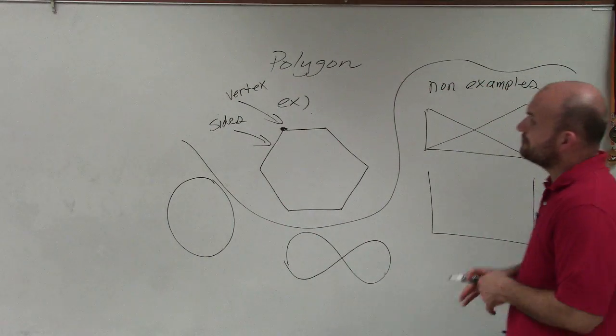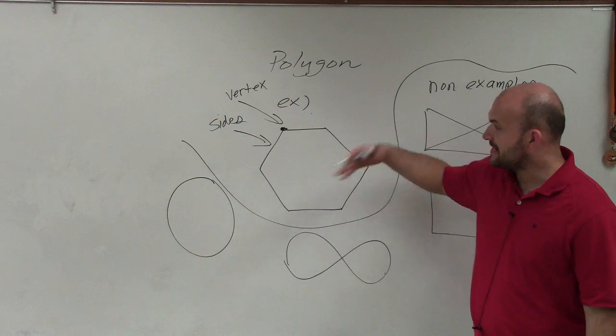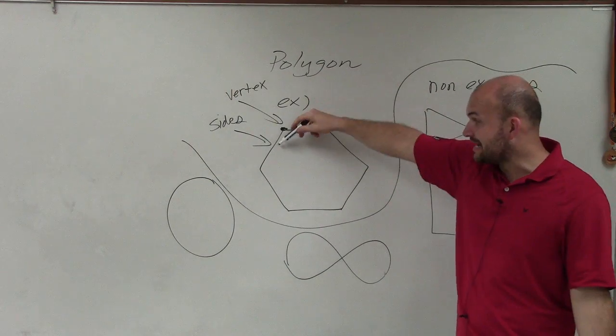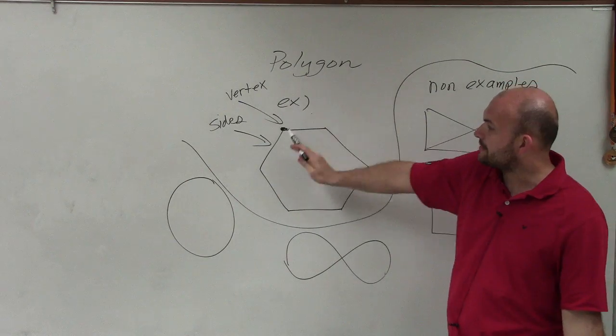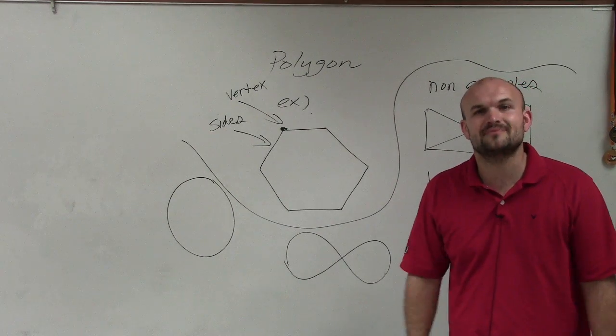So there you go, ladies and gentlemen. Again, a polygon is a closed figure that is made up of a finite number of sides that all lie on the same plane. And where the sides intersect is what we call the vertex. Thanks.